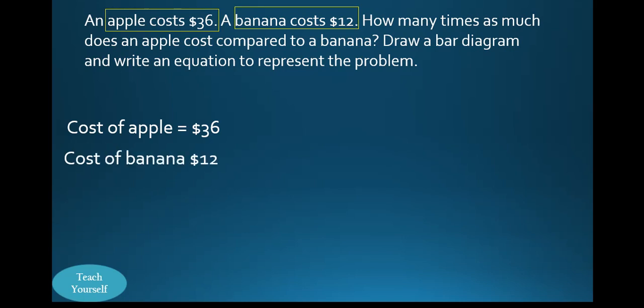We also know the cost of banana as $12. So we have how many times as much does an apple cost compared to a banana. We're going to write 36 equals, and we have the unknown representing how many times, times the cost of banana which is 12. So this is the multiplicative comparison.